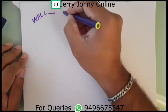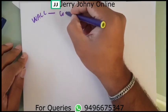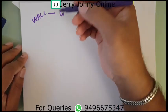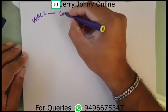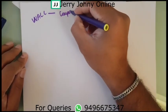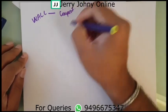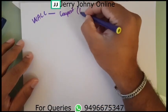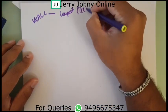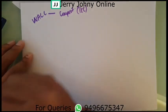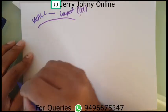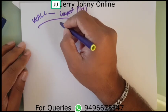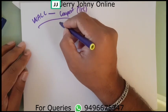WACC is also known as the composite cost. The composite cost of capital is the total cost of capital. This is the weighted average cost of capital.